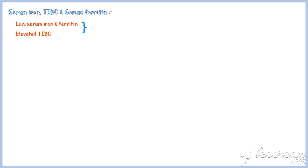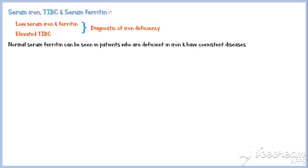Low serum iron and ferritin, along with elevated total iron binding capacity, is diagnostic of iron deficiency anemia. However, normal serum ferritin levels can be seen in patients who are deficient in iron but have co-existent diseases such as hepatitis and anemia of chronic disease, so it is important to rule out these conditions to arrive at a precise diagnosis.